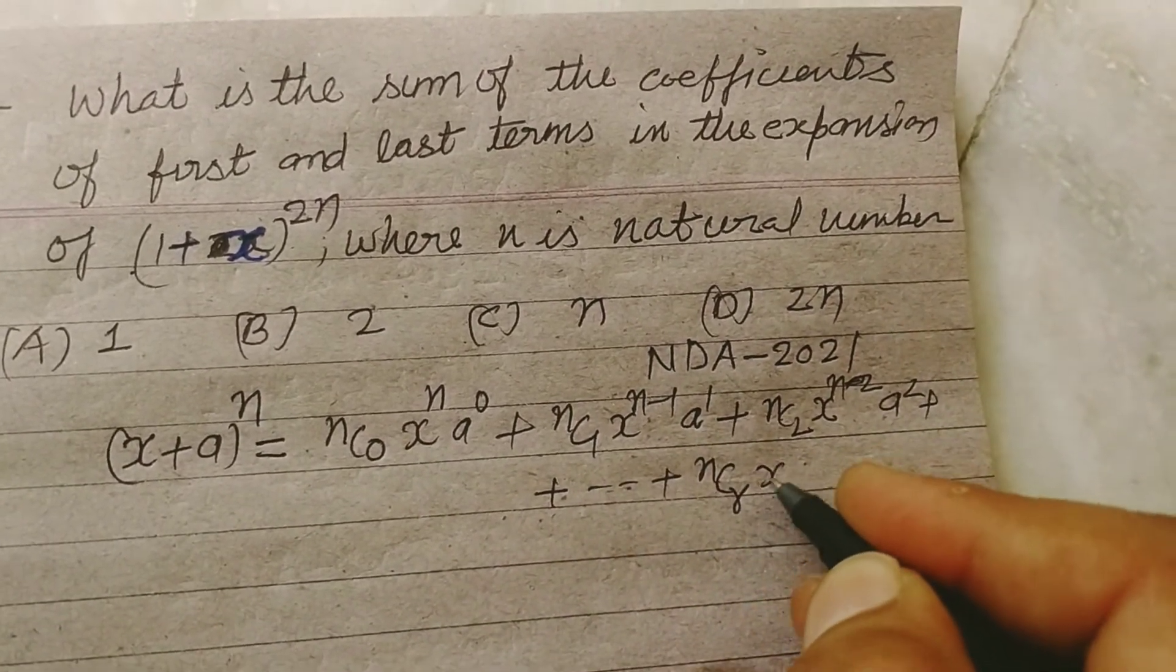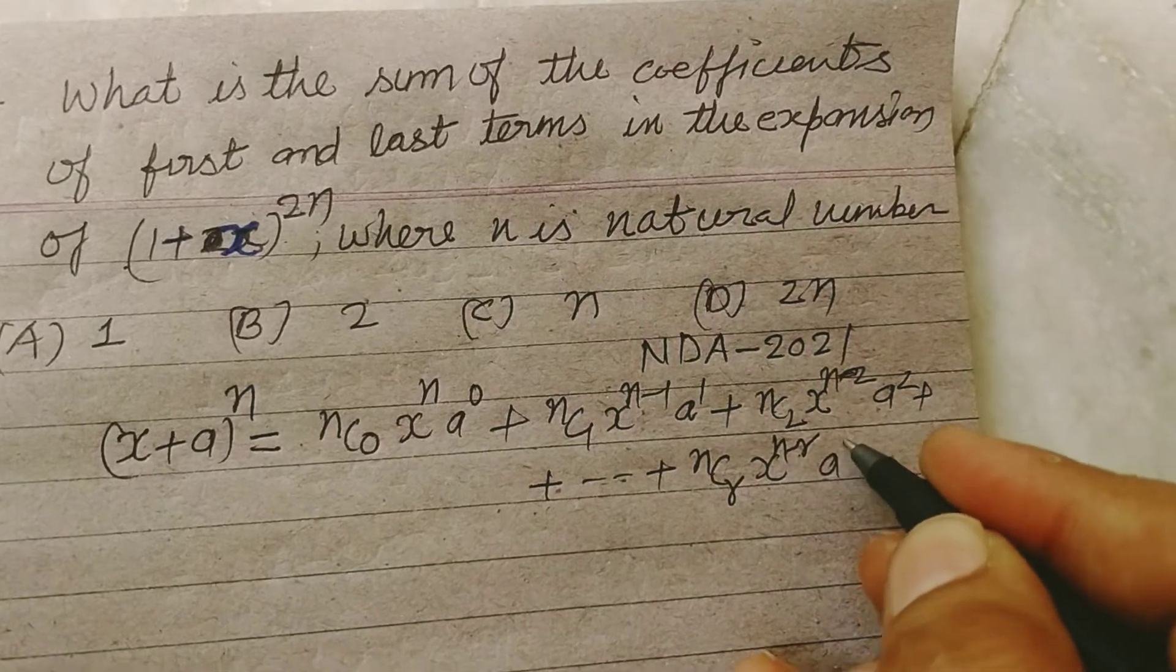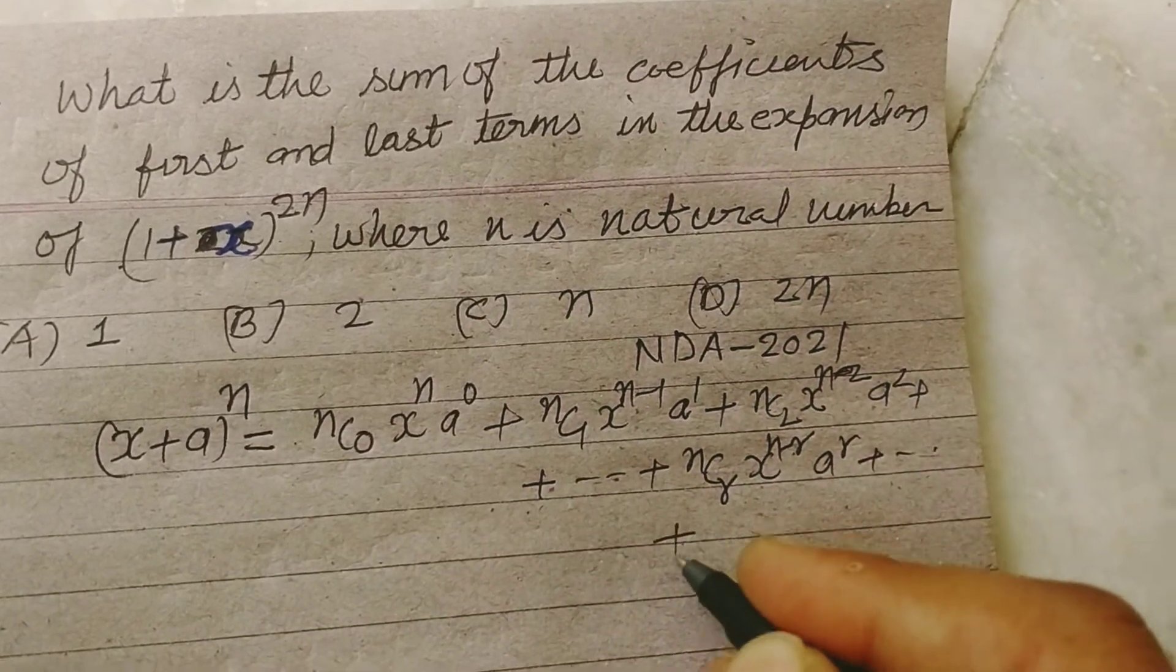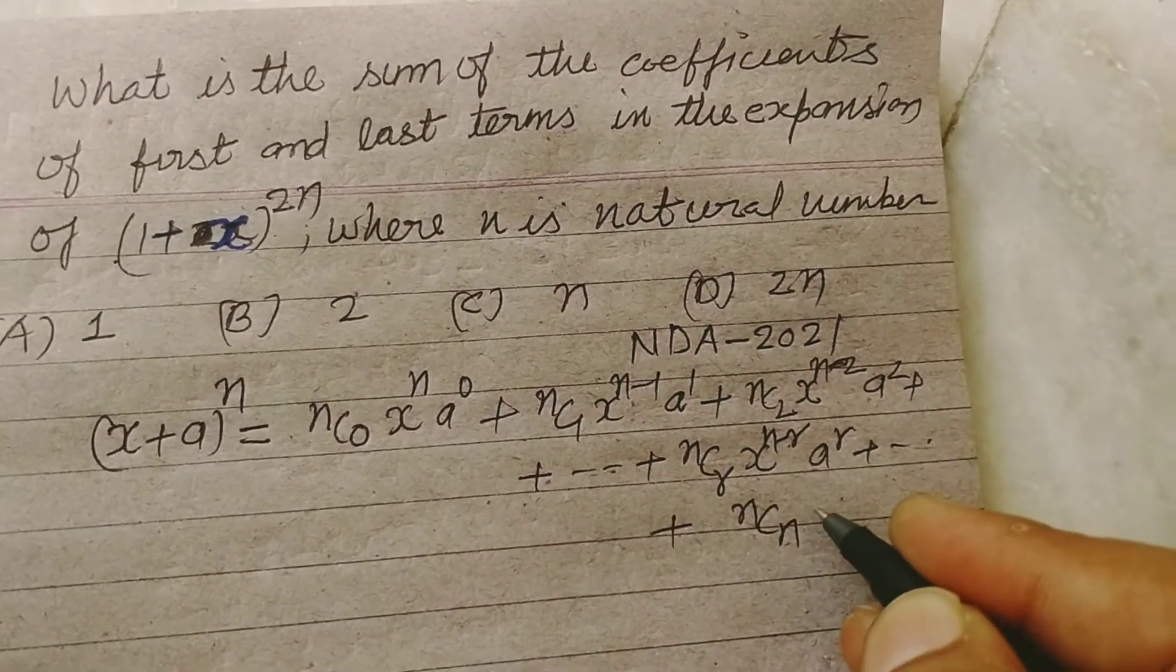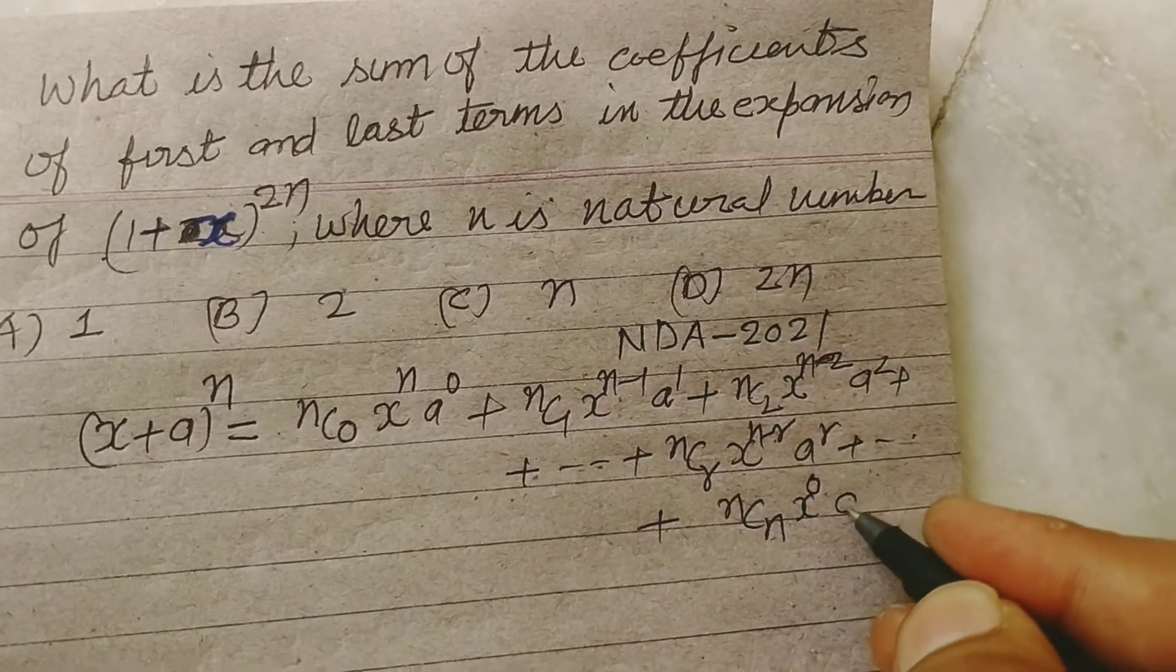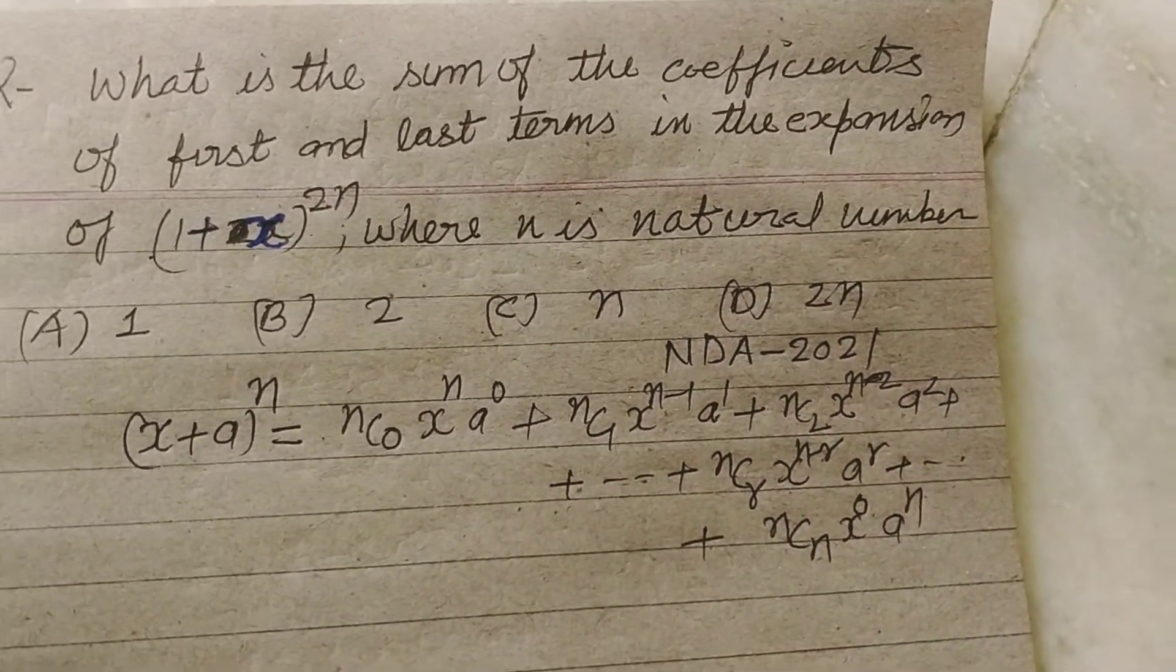Plus nCr x to the power n minus r, a to the power r, and the last term is nCn x to the power 0 and a to the power n. Similarly, by using this formula,